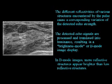The different reflectivities of various structures encountered by the pulse cause a corresponding variation in the detected echo signal. The detected echo signals are processed and translated into luminescence, resulting in a brightness mode, or B-mode, image. This B-mode ultrasound image shows different body tissues with various levels of brightness.